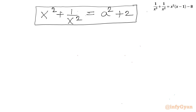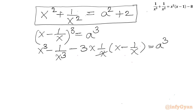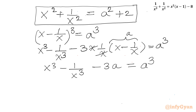Now we have to calculate x cubed minus 1 over x cubed. I will consider cubing the substitution x minus 1 over x on both sides. Applying the A minus B whole cube formula gives A cubed minus B cubed minus 3AB times A minus B. After cancellation, x cubed minus 1 over x cubed equals A cubed plus 3A.